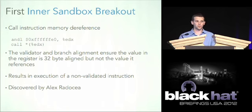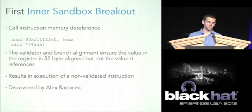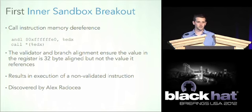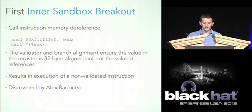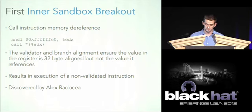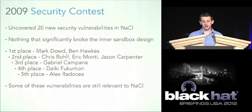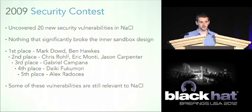The first known vulnerability in Native Client was found by Alex Rad in 2008 when NaCl was still a research project. The code pattern AND'd a register value to ensure 32-byte alignment, but the call instruction referenced the address that EDX pointed to rather than EDX itself — a simple but effective sandbox breakout. Then there was the 2009 Native Client security contest held by Google — mostly implementation bugs fixable with a few lines of C++, nothing that fundamentally broke the inner sandbox design.